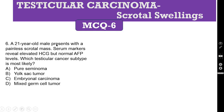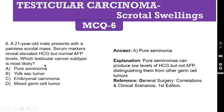MCQ 6. A 21-year-old male presents with a painless scrotal mass. Serum markers reveal elevated HCG but normal AFP levels. Which testicular cancer subtype is most likely? A. Pure Seminoma. B. Teratoma. C. Embryonal Carcinoma. D. Mixed Germ Cell Tumor. The correct answer is Pure Seminoma. Pure seminomas can produce low levels of HCG but not AFP, distinguishing them from other germ cell tumors. Reference: General Surgery Correlation and Clinical Scenario, second edition.